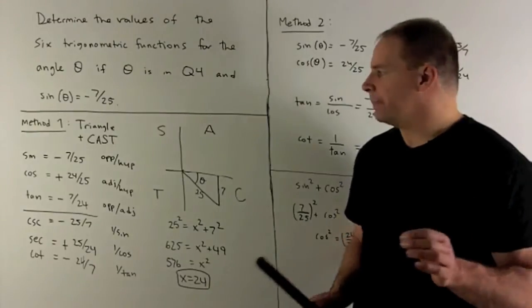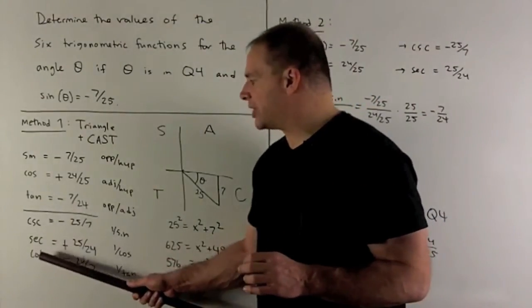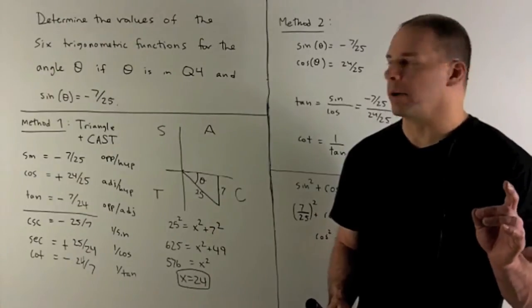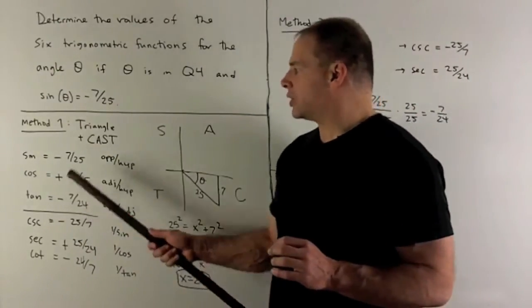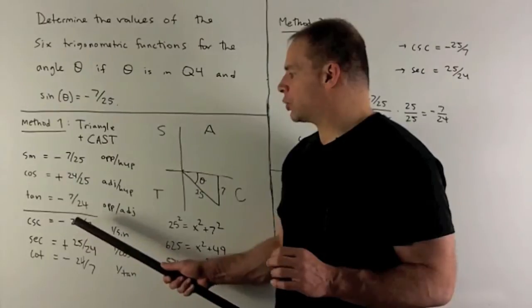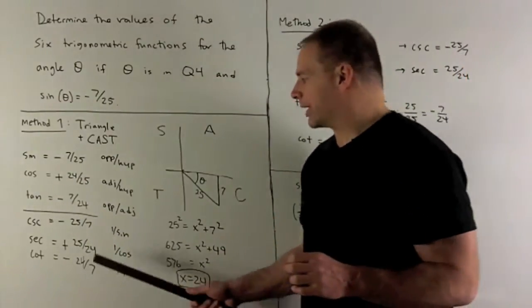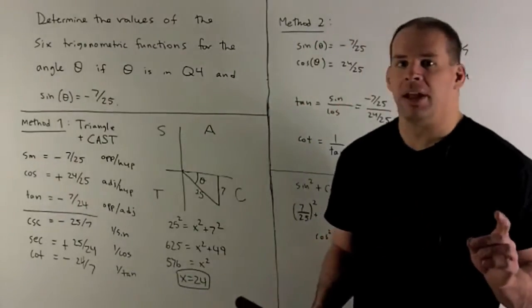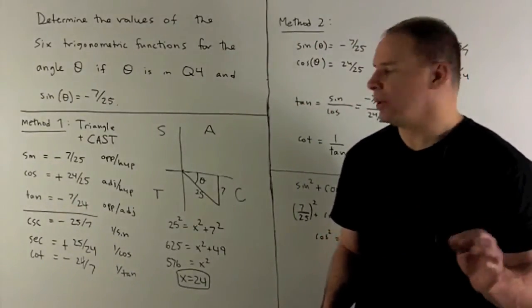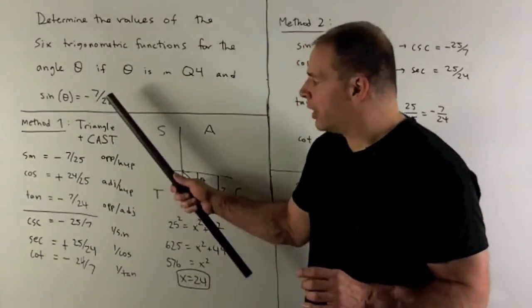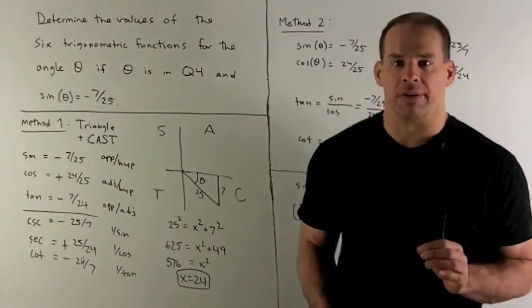Then if I want the next three, so cosecant, secant, and cotangent, we get those by just taking our first three, flipping them over. So cosecant is 1 over sine, so we'll get minus 25 over 7. Secant is 1 over cosine, so I get 25 over 24. Then cotangent, 1 over tangent, we get minus 24 over 7. So there are six values of our trig functions.